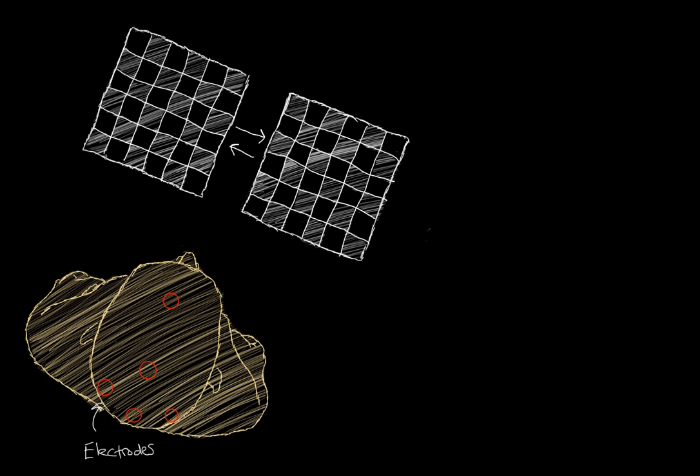In this case, it's a computer screen. On your computer screen you have a checkerboard with black tiles and white tiles. These tiles are actually going to alternate every half second or so. Maybe every half second all the black tiles will now appear white and all the white tiles will now appear black, alternating back and forth.